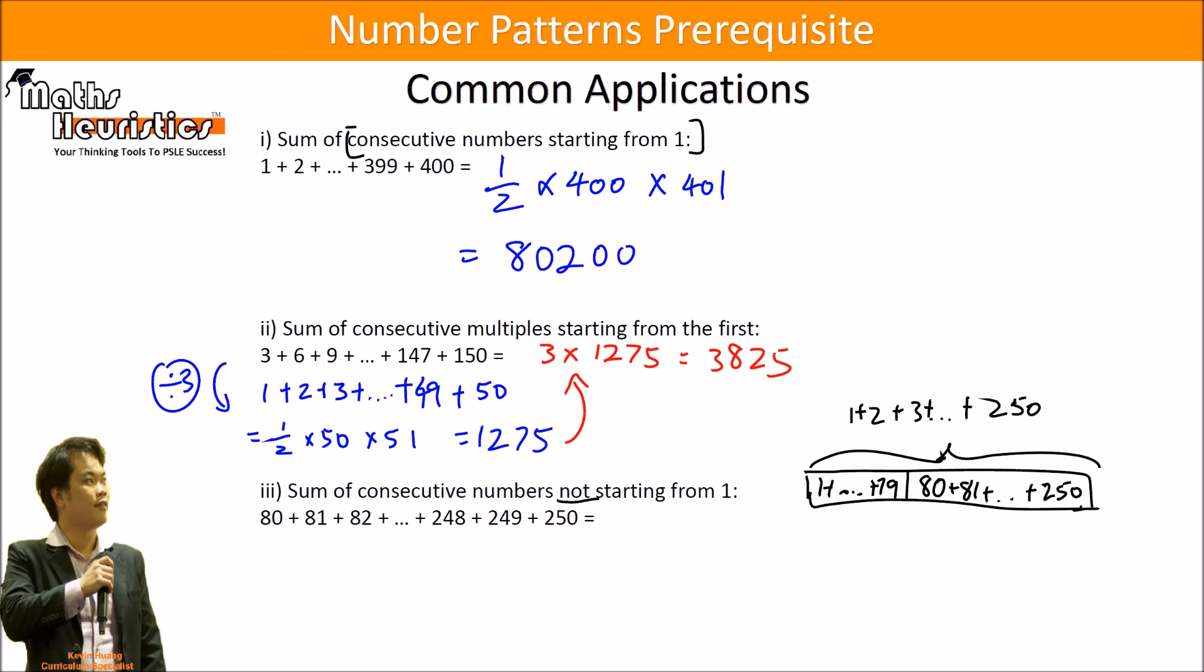So I'll find out the total first. The total here is half times 250 times 251, that will give me 31,375.